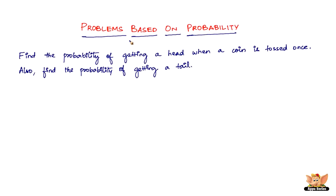In this video, let us solve problems based on probability. We've got a problem here which says: find the probability of getting a head when a coin is tossed once, and also find the probability of getting a tail. It's a pretty simple problem to start off with.